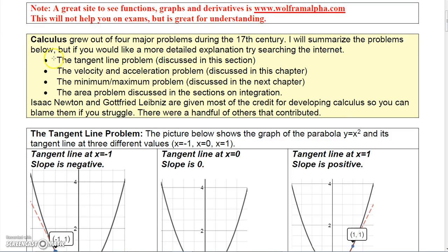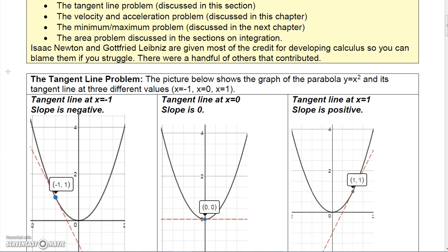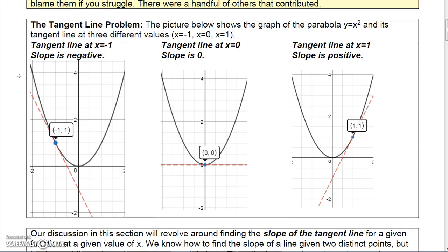There were four major problems that calculus grew from, and the tangent line problem is one of those. The area problem is another, along with velocity, acceleration, minimization, and maximization — we will actually get to those. Newton and Gottfried Leibniz were the two given most credit for calculus, so you can blame them if you struggle in this course.